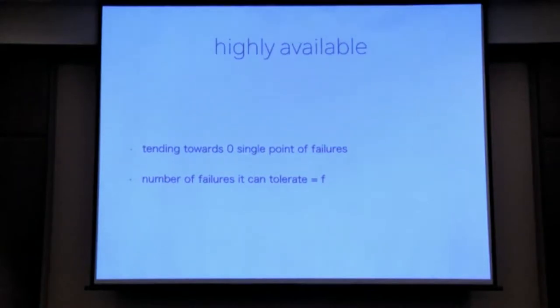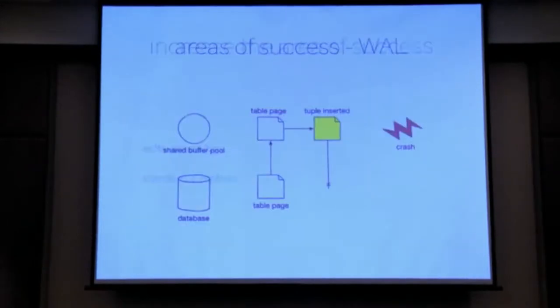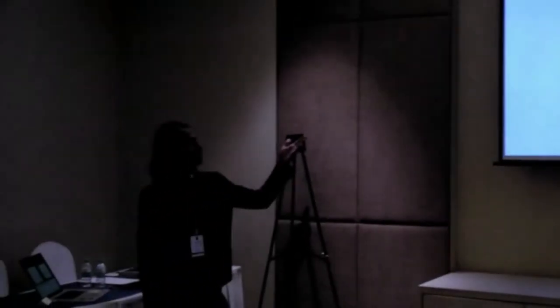If you're running a critical financial system, this number might be really low. Postgres already has a few things built in for this — namely write-ahead logs, standbys, and replicas. Write-ahead logs are useful because if you have a crash while inserting a tuple on a page, you can replay it back. The WAL solves that by committing to a WAL segment, so a background writer process can eventually replay it back. This is a fail-safe mode of writing early and being able to replay.